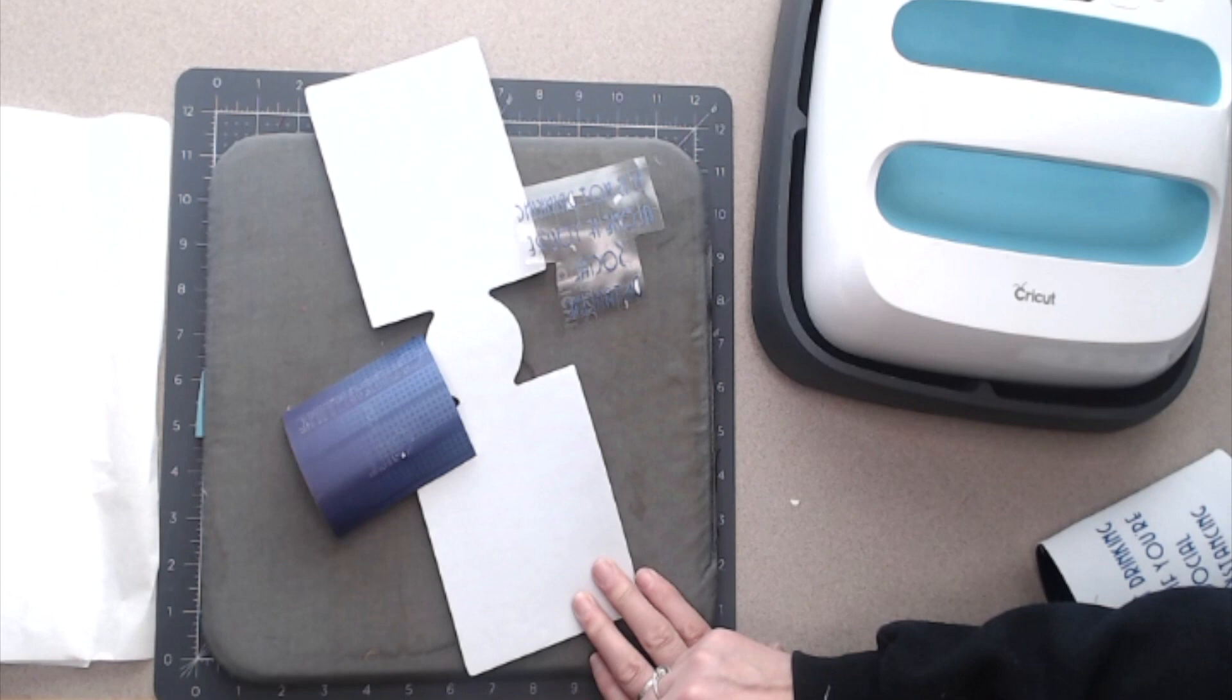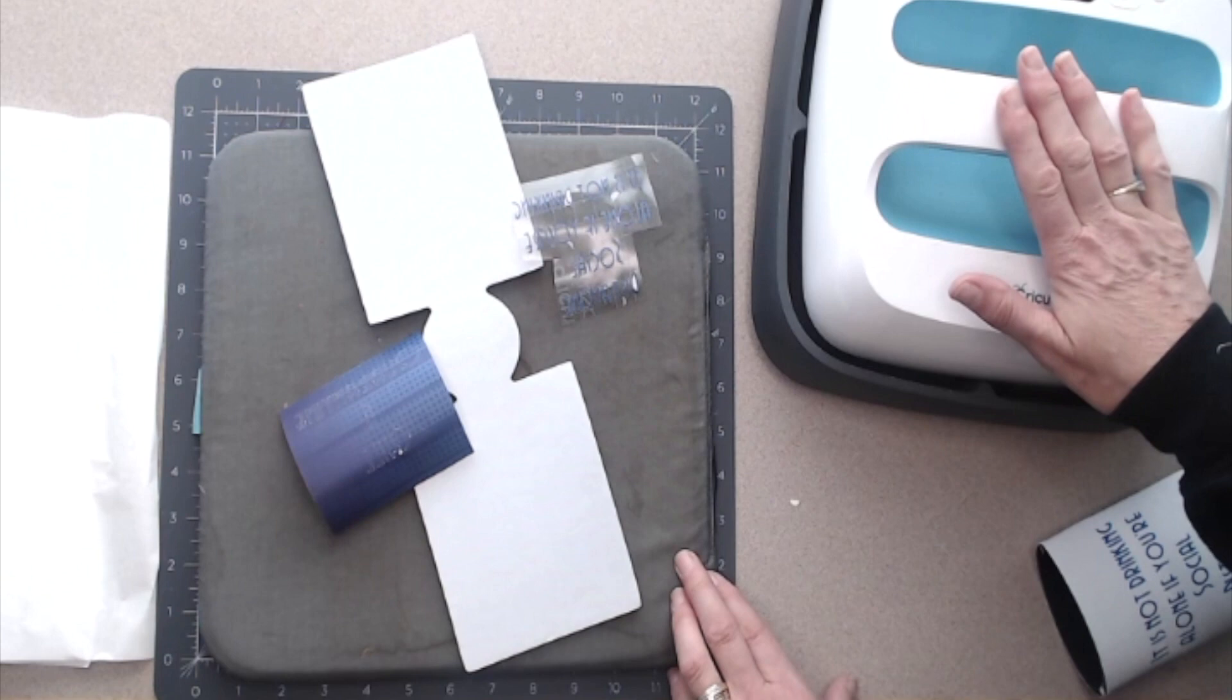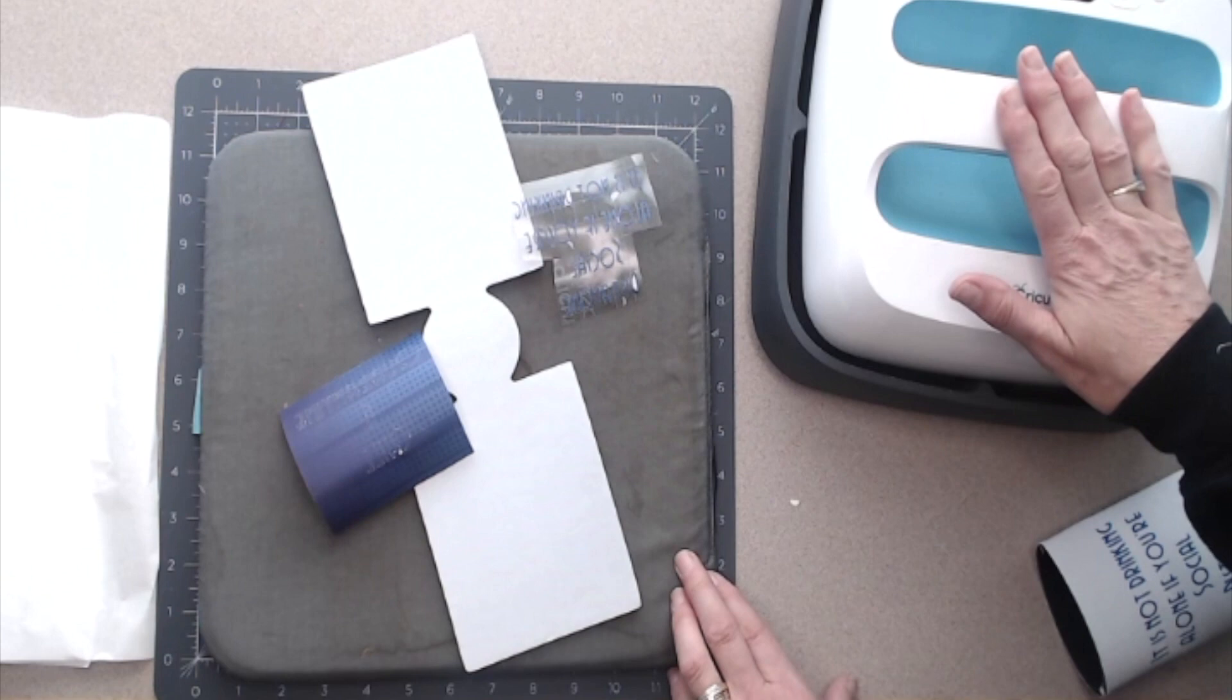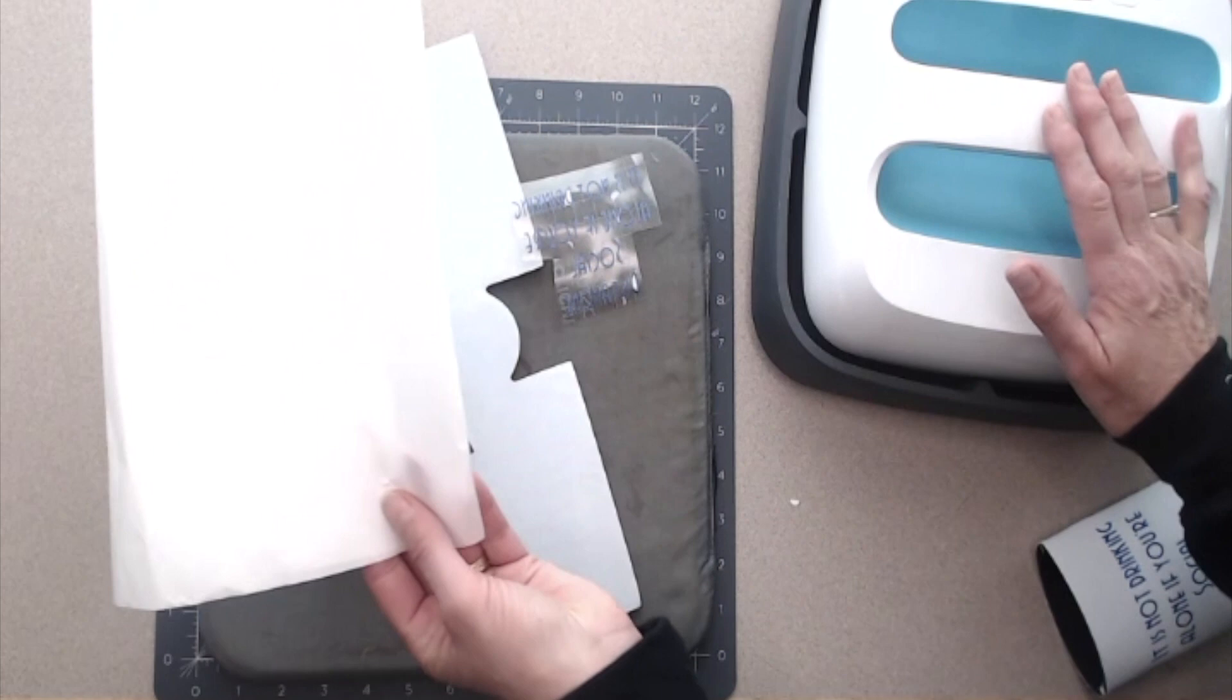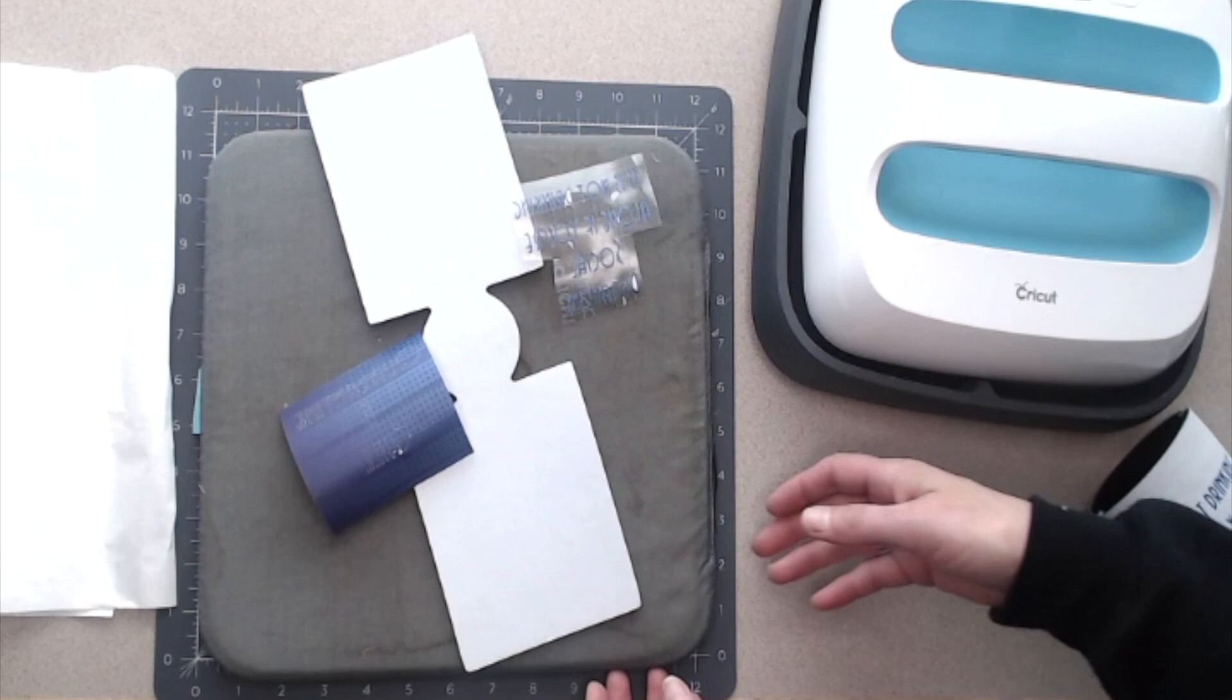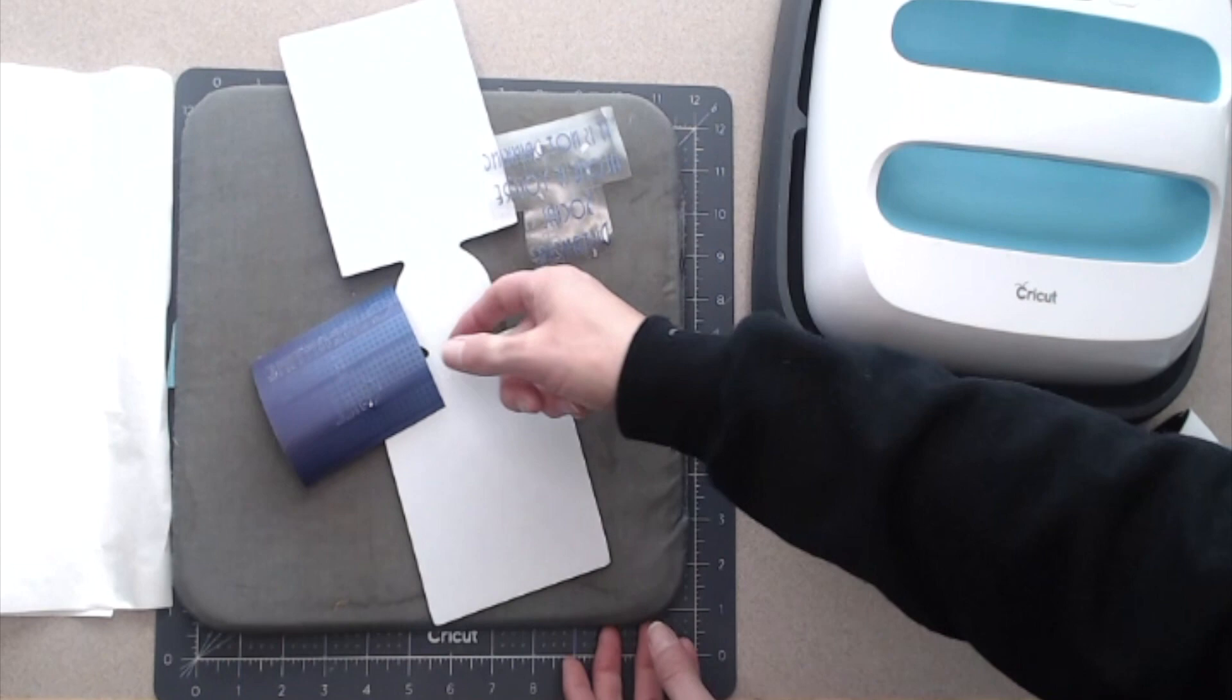Of course you're going to want your Easy Press. I have the original Easy Press and it's not normally used for infusible ink, but I have found settings to work, so I'll share that setting with you. And then you're also going to want some butcher paper and your Easy Press mat. Let's go ahead and get started on this project.